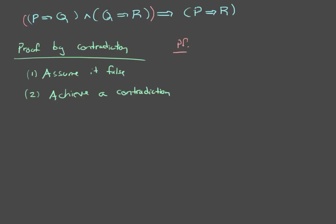When is an implication statement false? Well, assume it's false. Then P implies R is false, and this must be true. And P implies Q, and Q implies R is true.